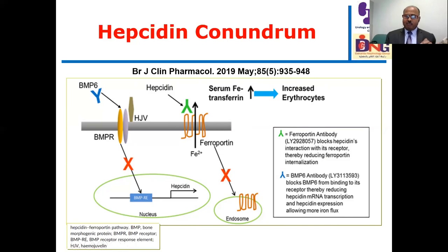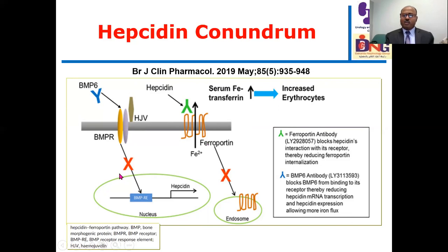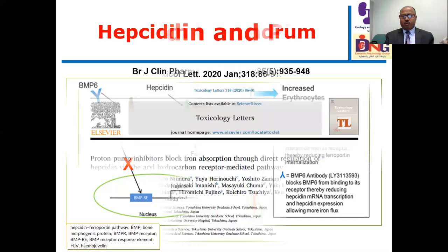These are phase one studies. We may target hepcidin by antibodies that bind ferroportin to prevent hepcidin from degrading ferroportin, or by antibodies that bind to the BMP receptor and block hepcidin release. So the approach is either to inhibit hepcidin release or to inhibit hepcidin from degrading ferroportin.